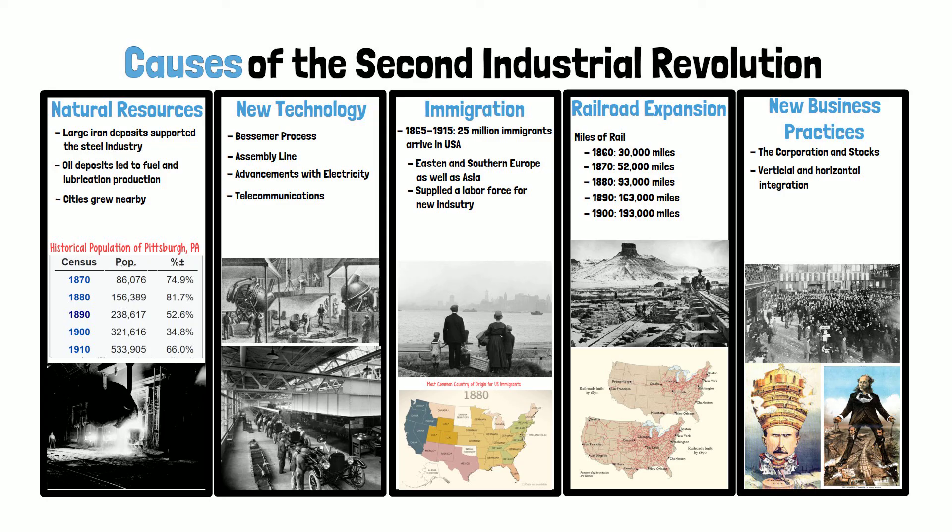In short, the Second Industrial Revolution was caused by multiple factors that each worked together to support the others. By the turn of the century, in the early 1900s, the United States had emerged as one of the world's leading industrial economies.